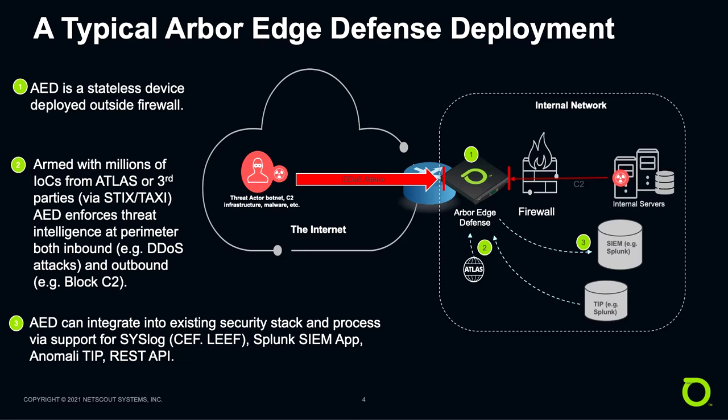A user in the organization clicks on a bad link and gets their computer infected with malware. The first thing that malware does is phone home to a command and control server somewhere on the internet. The C&C server would typically respond with instructions on what to do next — perhaps to download more advanced malware or a rootkit that would enable the attacker to get full access to that computer and form a bridgehead into the rest of the organization. With AED's outbound blocking, that initial phone home to the command and control server is blocked, and the malware is left dormant and is no longer any kind of threat.